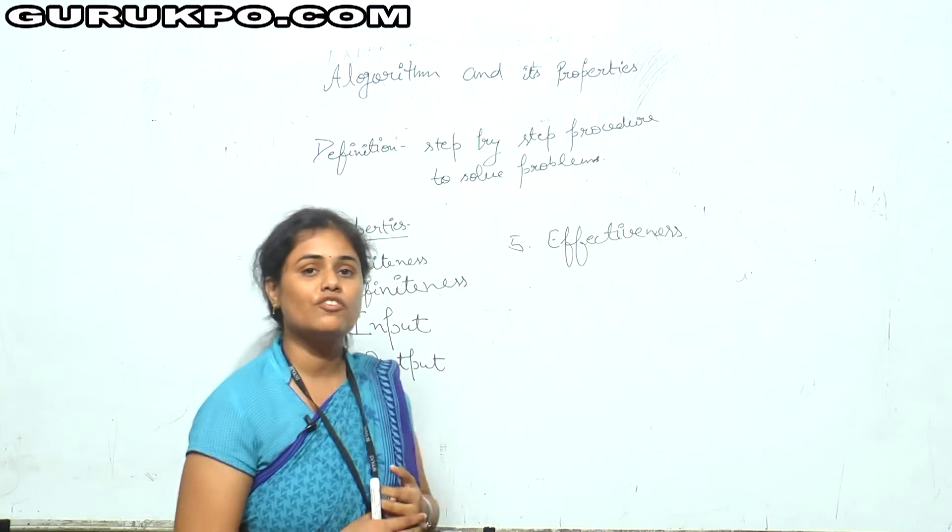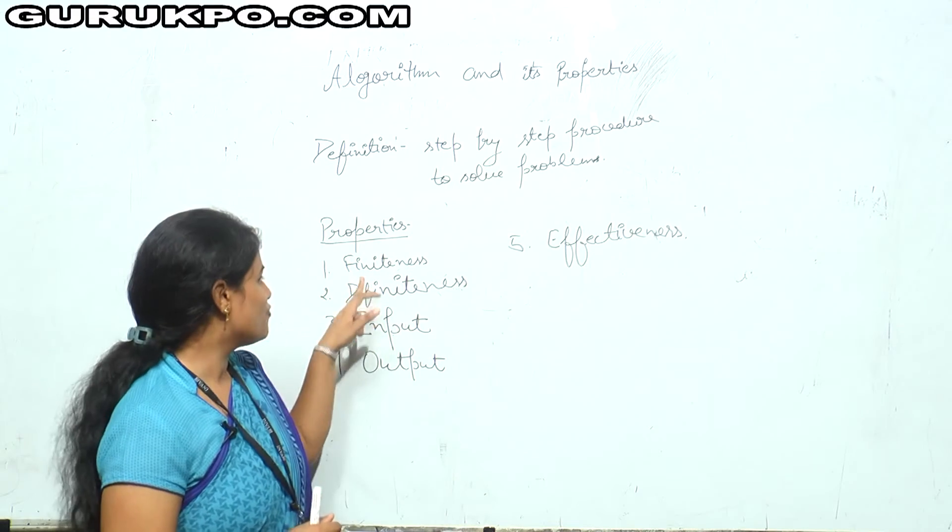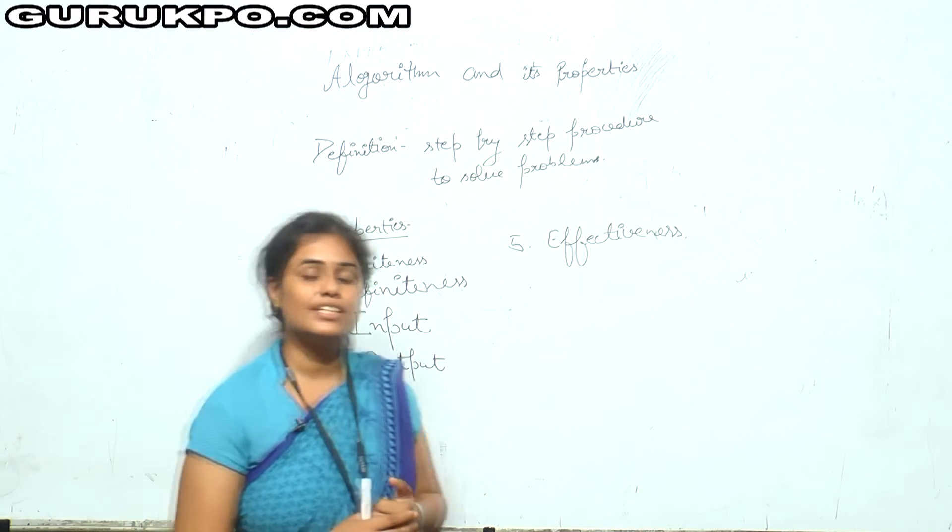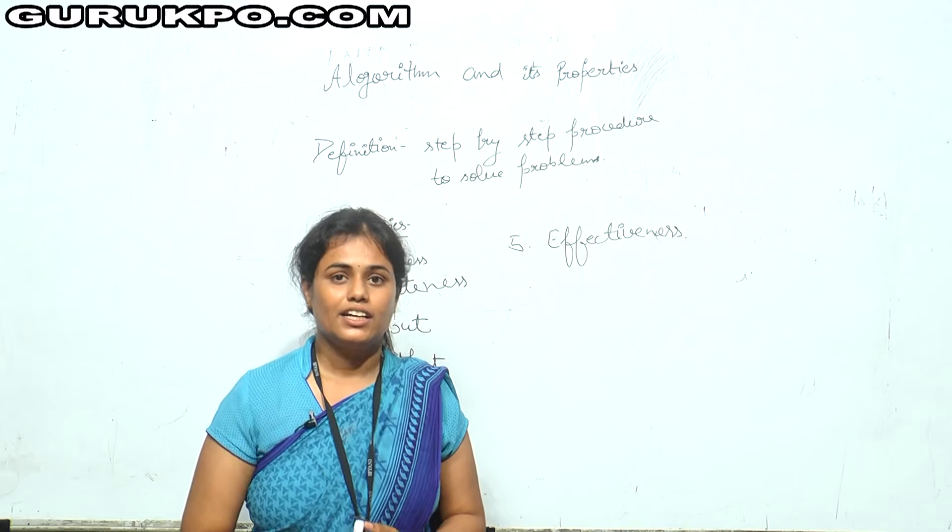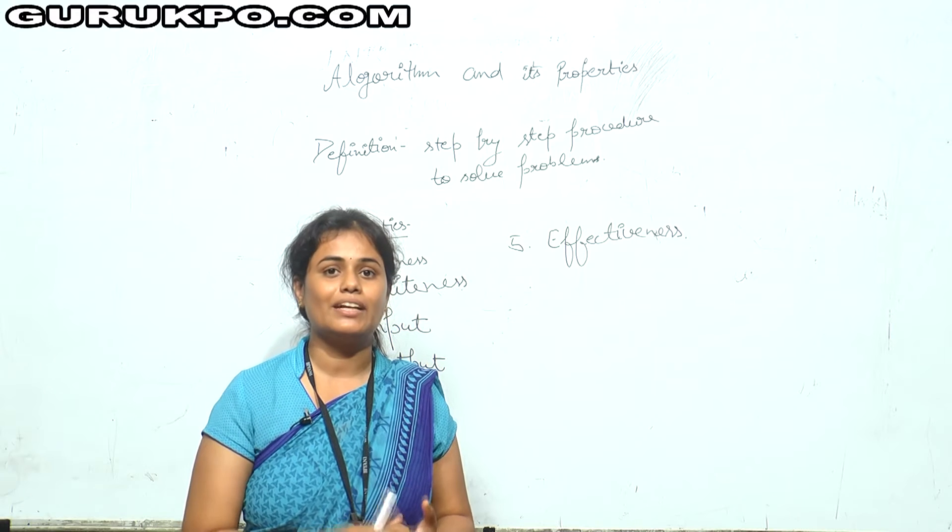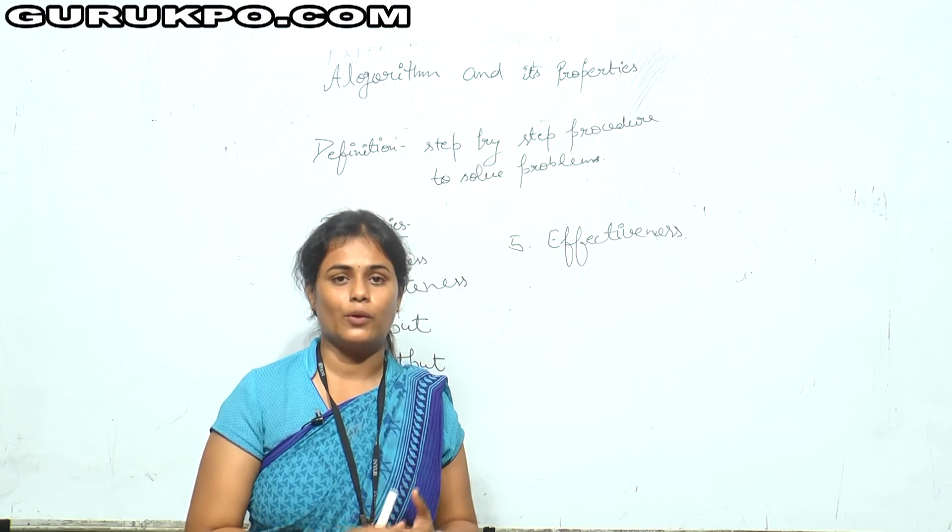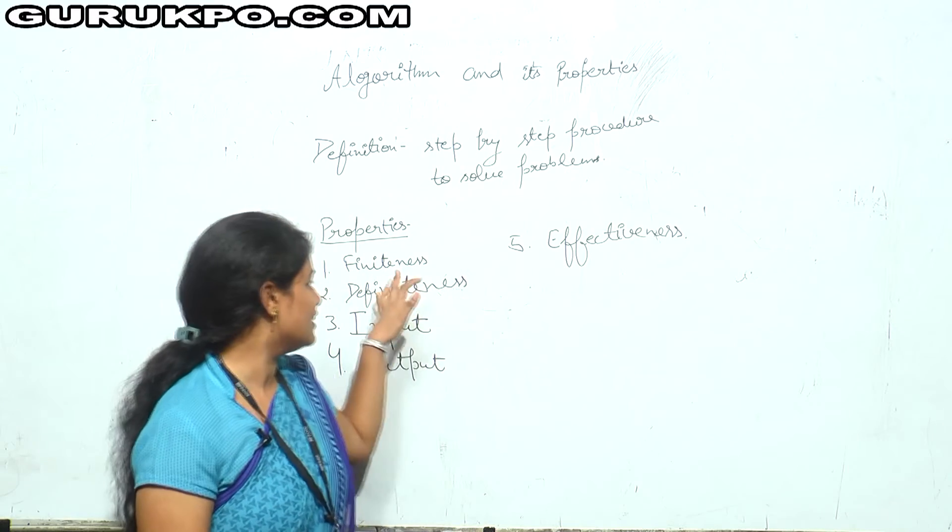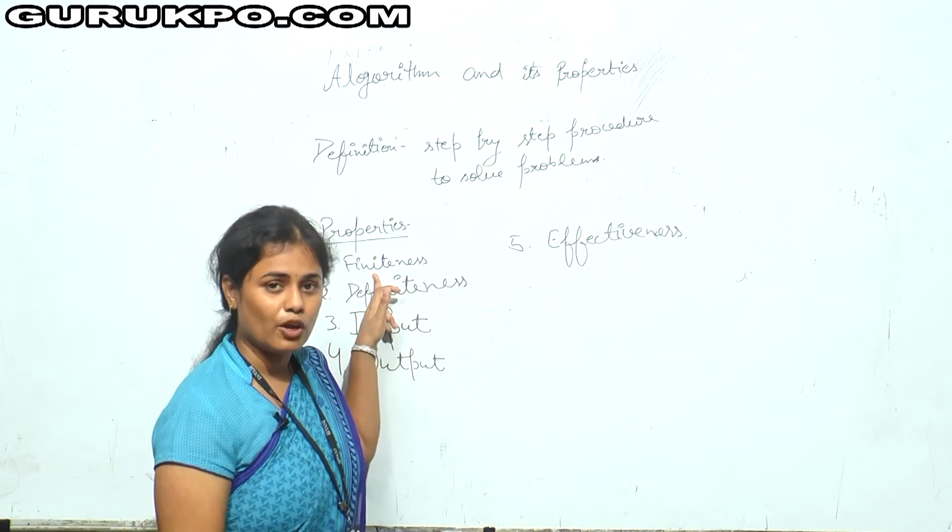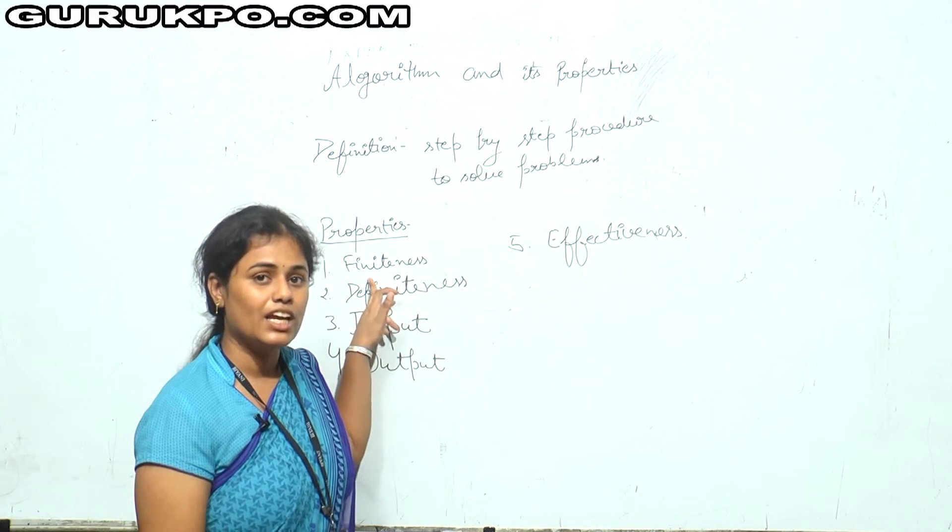And second, what are the properties of algorithm? First of all, finiteness. Finiteness means algo should be complete. It should not be like that you are not completing the algo, then output will not generate. The output will come if the algo is complete. Finite means here the number of steps in an algorithm should be finite. Algo should be complete.